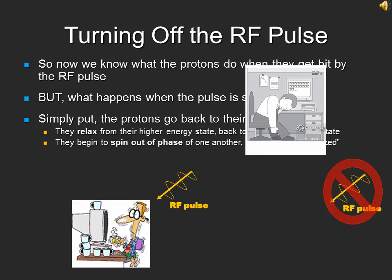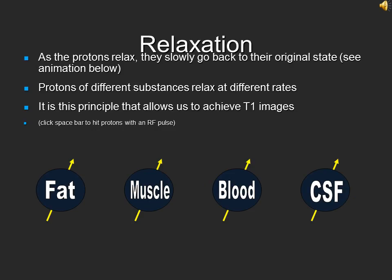So now that we know what happens when the protons are hit by the RF pulse, what happens afterwards? Simply put, the protons will eventually go back to their original state. Over time, they will lose the energy gained, and will align themselves back in the same direction as the magnetic field. As well, they will begin to spin out of phase with each other, eventually eliminating the transverse magnetization plane.